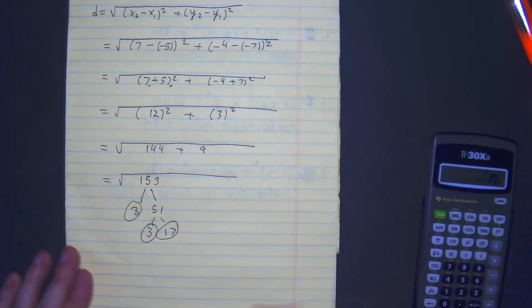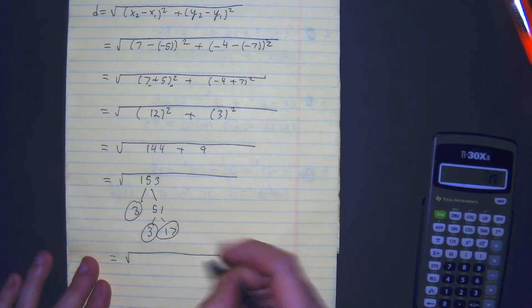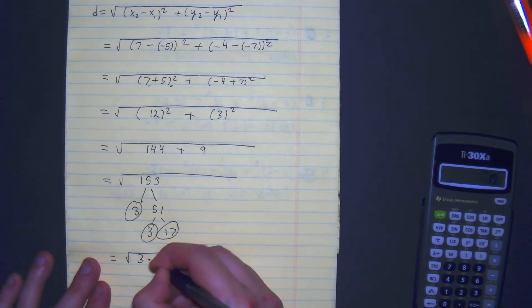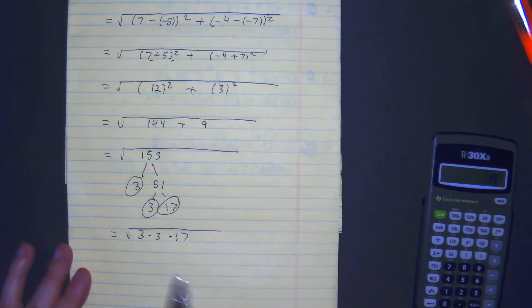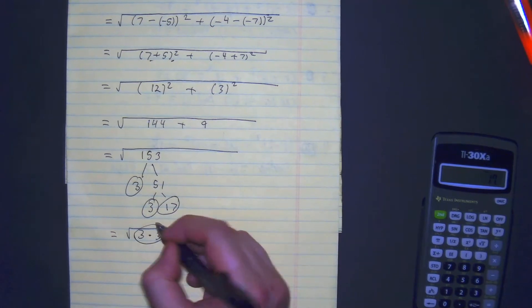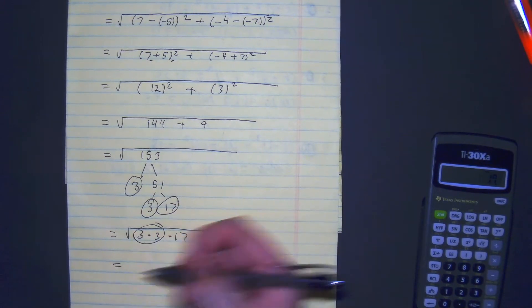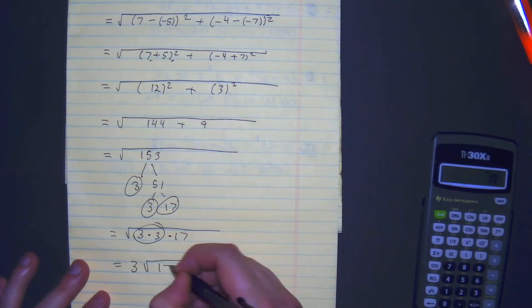All right, and so we made our 153 now to 3 times 3 times 17. And since we are working with the square root, we need two prime numbers so we can pull it out. We get this is equal to 3 square root 17.